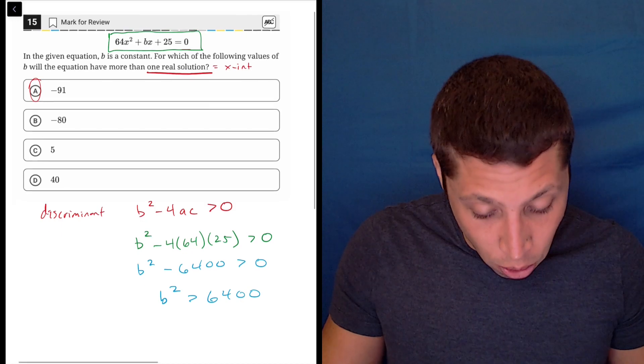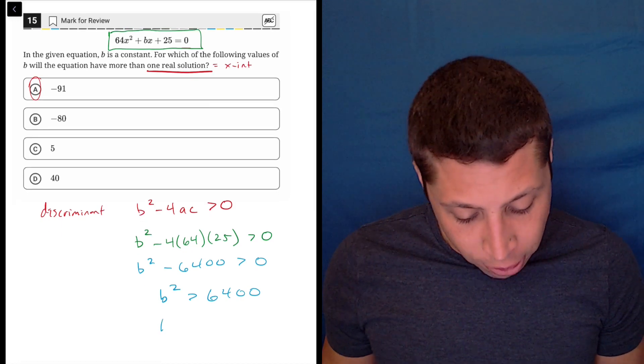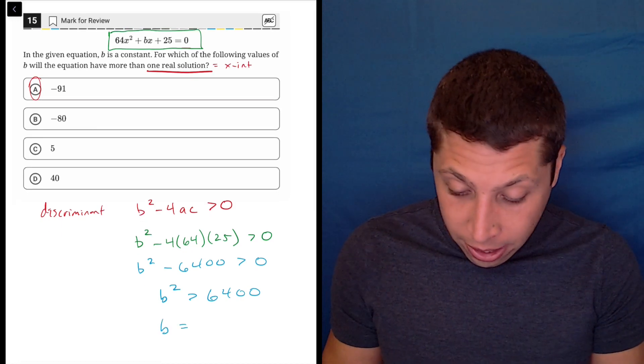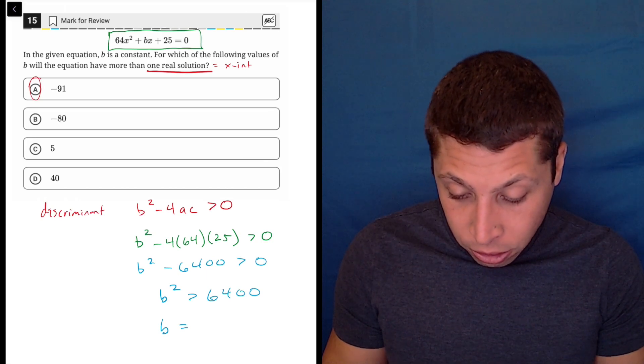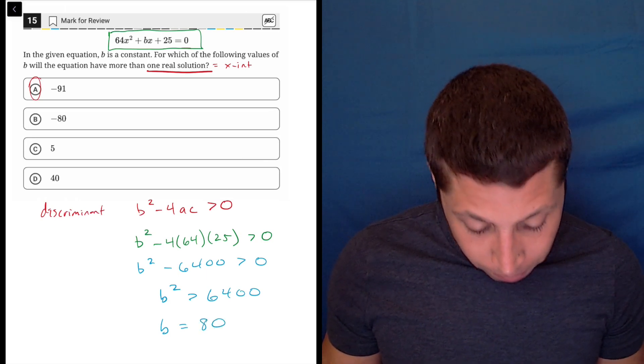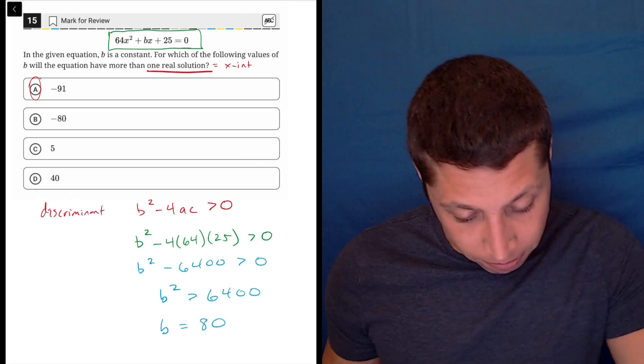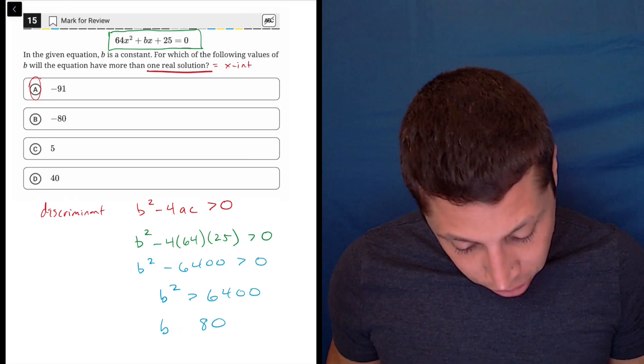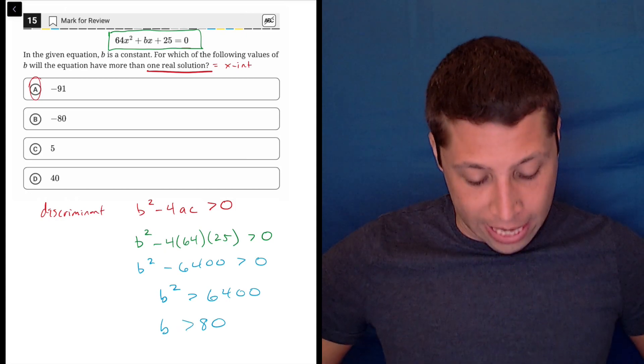And this is where it gets a little annoying. If we just kind of naturally take the square root of each side, the square root of 6,400 is 80. And I switched something I shouldn't have. We should say that b is greater than 80.